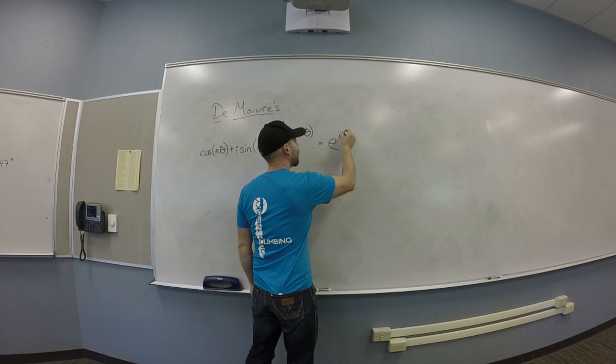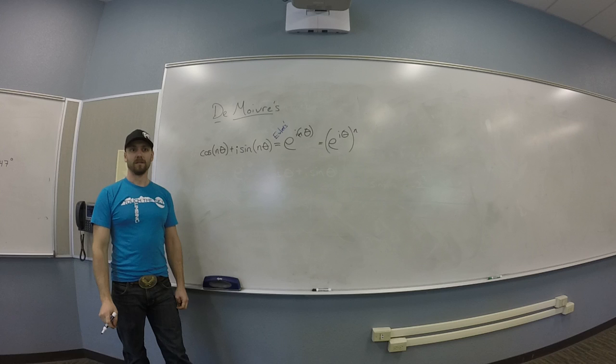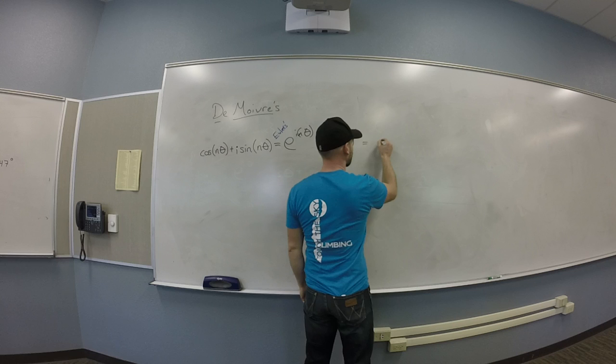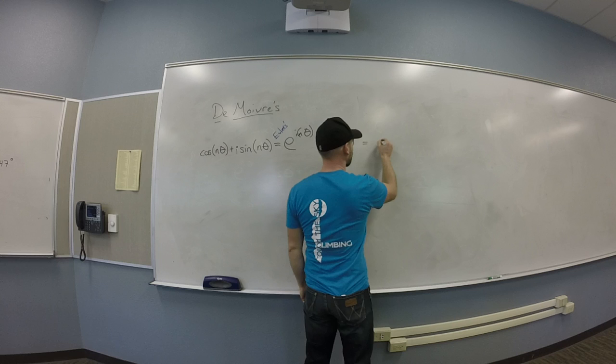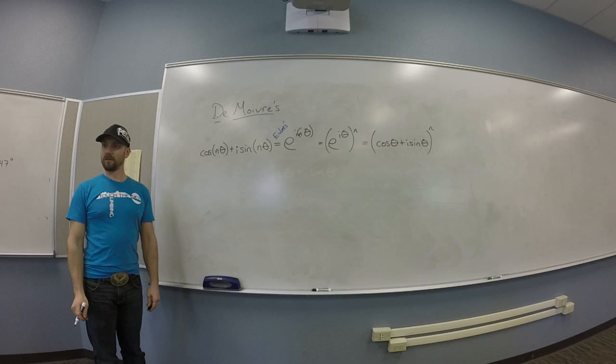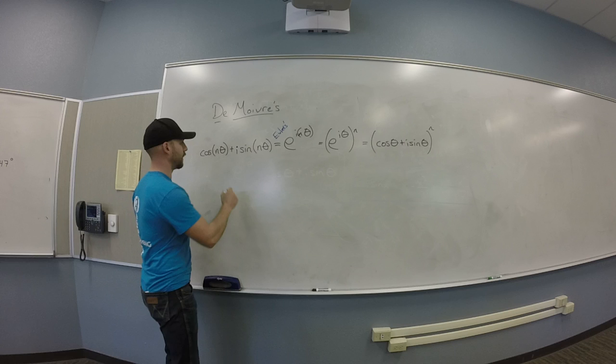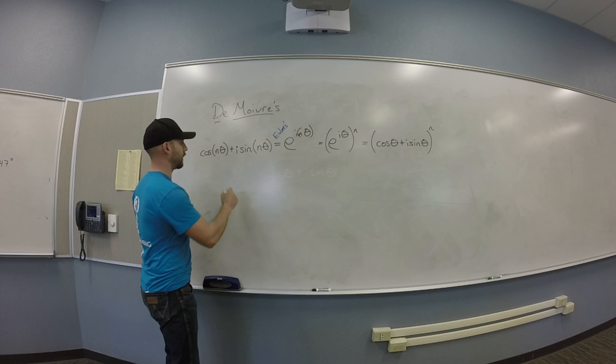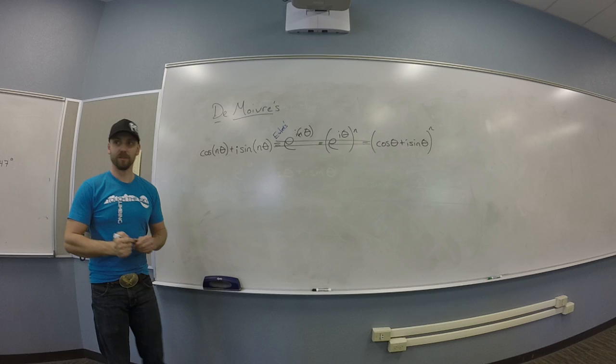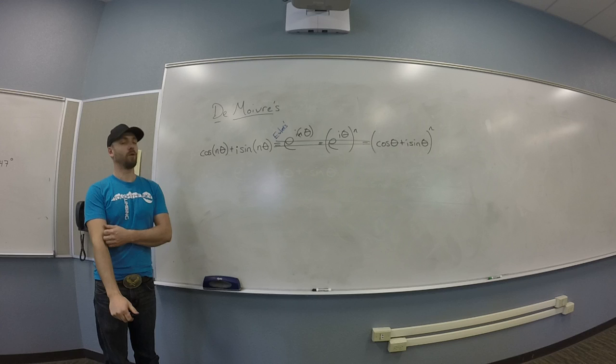Another option is you could say, but hey, that's e to the i theta raised to the n power. Fair enough. And e to the i theta by Euler's is just cosine theta plus i sine theta. Let me rewrite this like that, all that raised to the n. Cool. So De Moivre's is actually this part with a big fat equal sign through your two bits of Euler's. You guys see that?